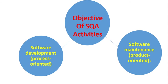The objectives of software quality assurance activities are organized into two categories: software development and software maintenance. Development is process-oriented, meaning the software is in the development phase. Maintenance is product-oriented, meaning the software has been delivered to the end user and now requires maintenance. These two orientations define the scope of SQA activities.